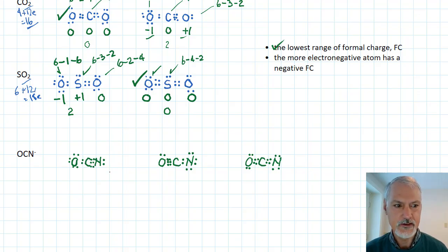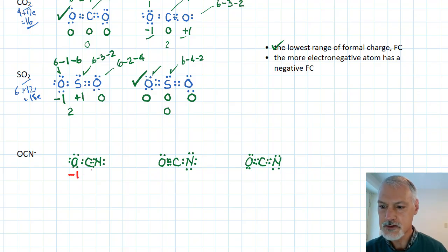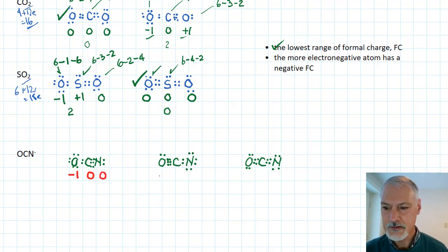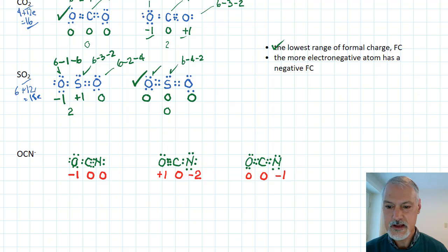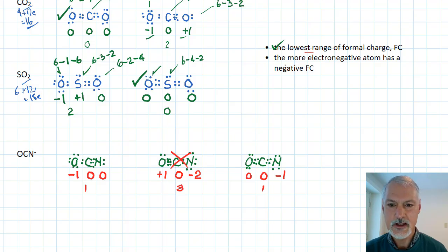Let's now take a look at the formal charges in these various cases. In the first structure, oxygen has a minus one formal charge, carbon is zero, and nitrogen is zero. In the second structure, oxygen has a plus one charge, carbon is zero, and nitrogen has a minus two charge. In the third arrangement, oxygen is zero, carbon is zero, and nitrogen is minus one. From first glance, the second structure's range is three, which is larger than the ranges of the other two, which are both one. So we can eliminate the second structure by the first rule.